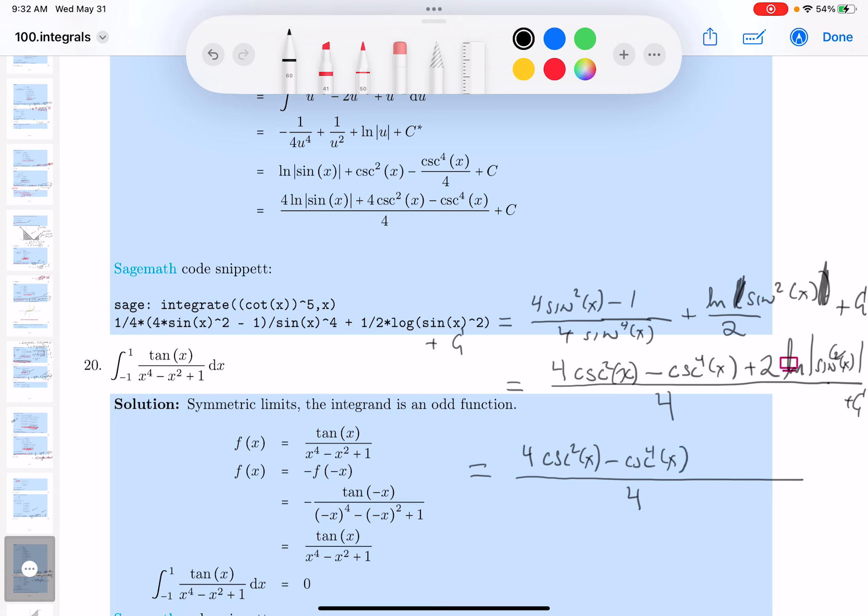I'm going to take this two and bring it down. And that's going to give me four ln absolute value the sine of X plus C.